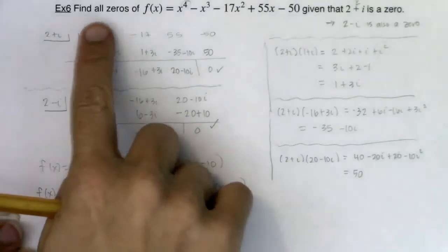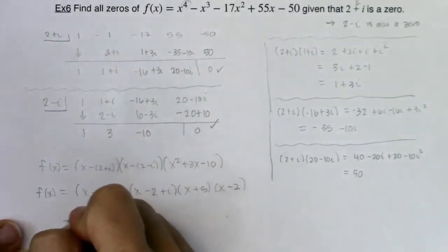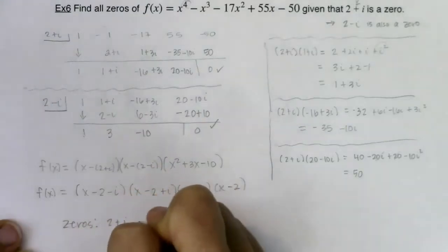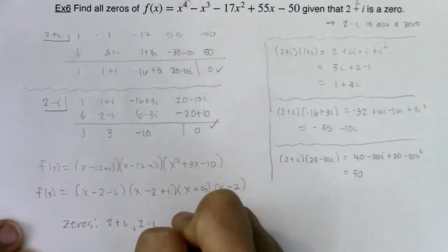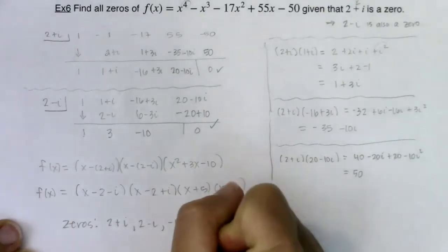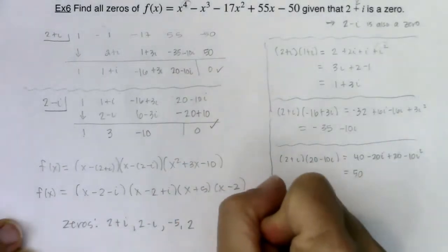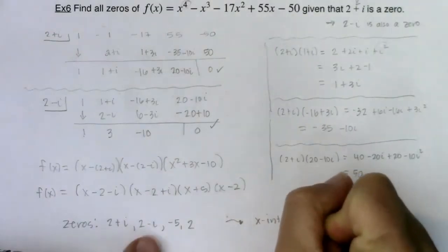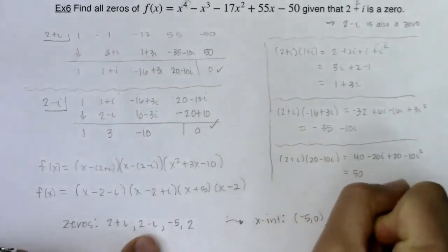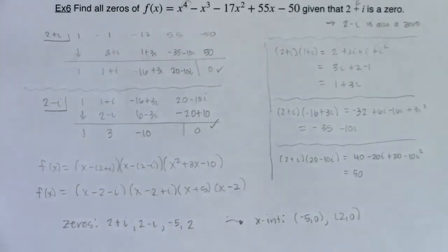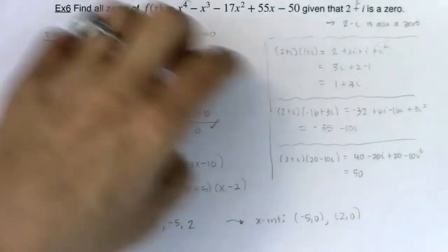Our directions were to find all of the zeros. I know that two plus i is a zero — that was given. I know its conjugate has to be a zero. From the factor x plus five, I know negative five is a zero. And from the factor x minus two, I know two is a zero. Now, which of those turn into x-intercepts? The only ones that turn into x-intercepts are negative five and two, because those are the only real zeros.